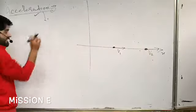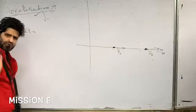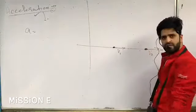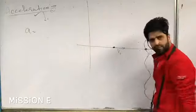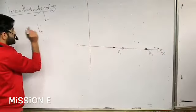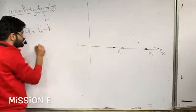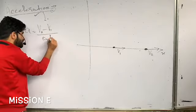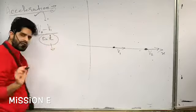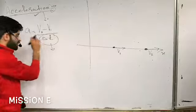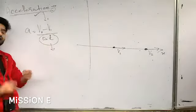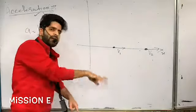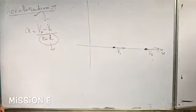To define acceleration, find the change in velocity: it is the final velocity v2 minus the initial velocity v1, divided by the time interval delta t. Delta t is the time in which the particle changed its velocity from v1 to v2.